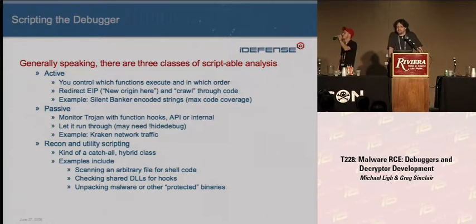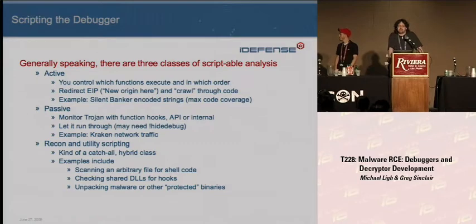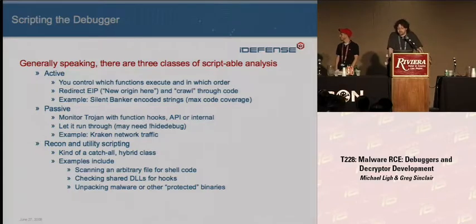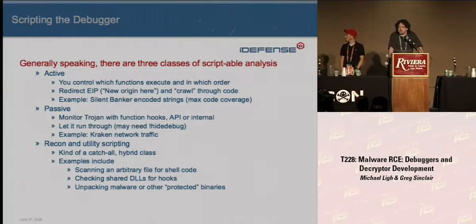Another way is called passive. This is where you more or less let the malware run as it normally would, with the exception that you're running it in a debugger. You're monitoring key aspects of it, either API calls or internal functions. An example is monitoring the Kraken traffic — Kraken actually encrypts the network traffic going across the wire. So you can catch it a couple lines before where it actually encrypts the traffic. When it encrypts, you'll have the plaintext before it encrypts, so you just capture that and see what's going on.